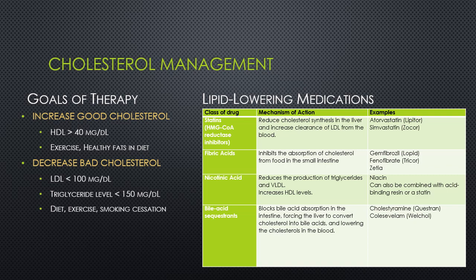When we're managing cholesterol, our goals of therapy are to increase the good cholesterol, or HDL, to greater than 40 milligrams per deciliter, and to decrease the bad cholesterol, or LDLs, to less than 100 milligrams per deciliter. In addition to LDL, we also track triglyceride levels to make sure that they're less than 150 milligrams per deciliter.